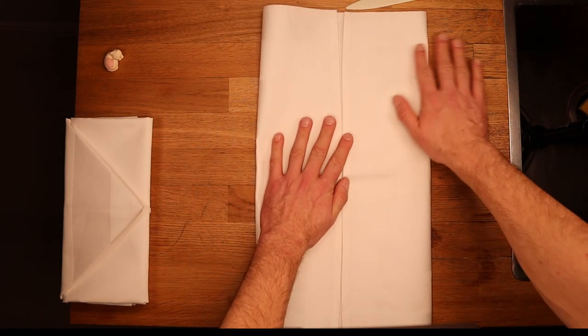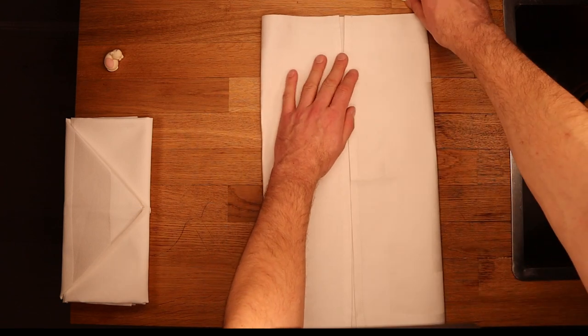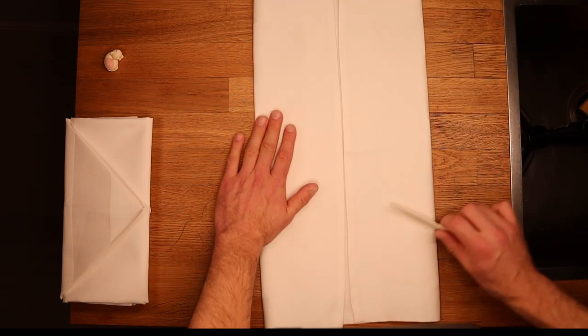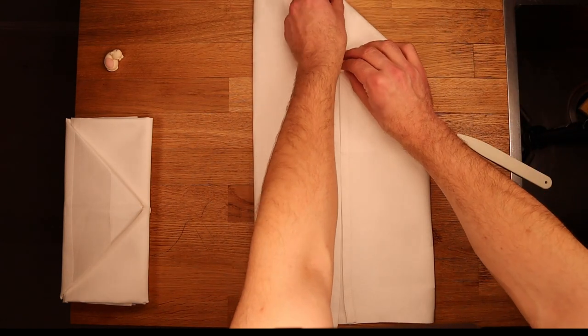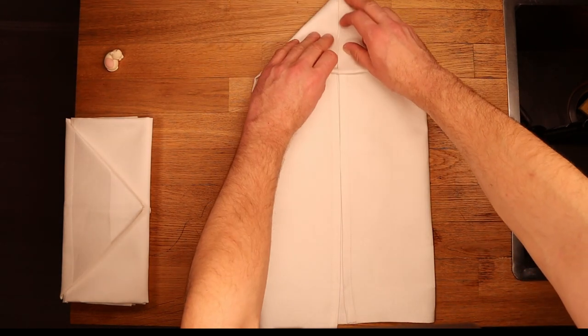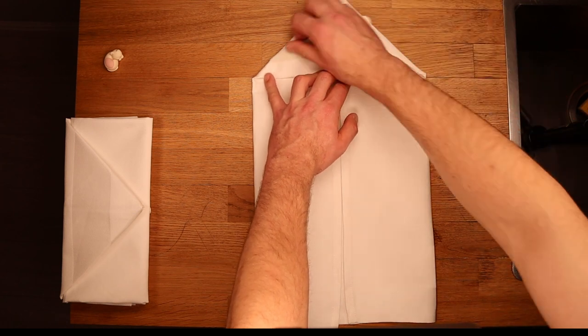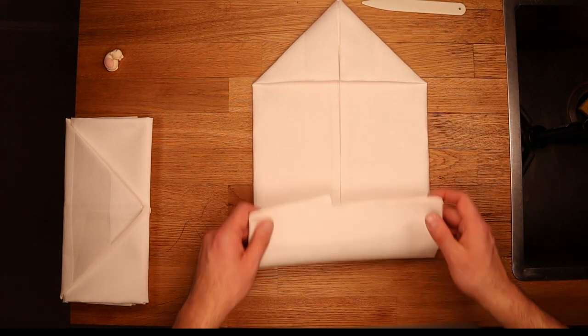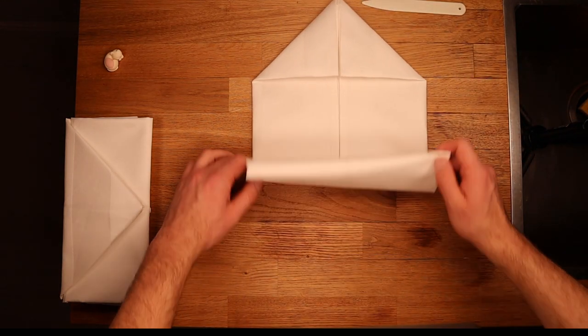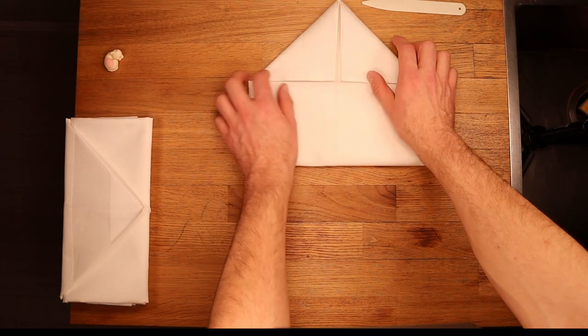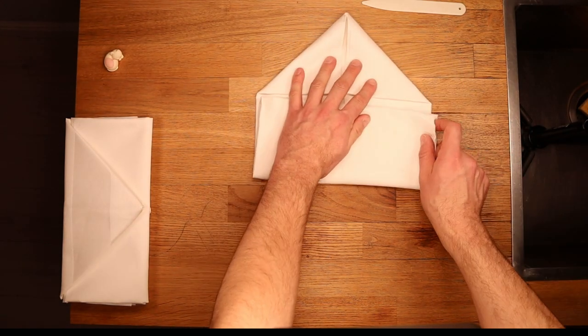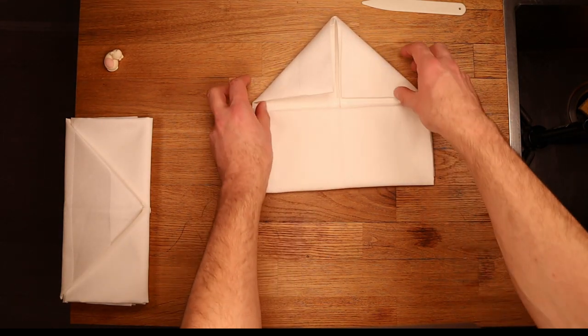For this fold, I'm using a 50 by 50 centimeter damask table napkin made from 100% cotton in a solid white color. As it is to default, other materials will work as fine. The dimensions of the finished napkin is about 11 x 25 cm or 4.5 x 9.5 inch.